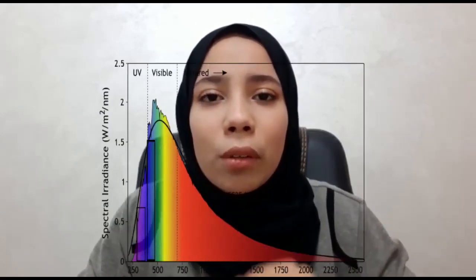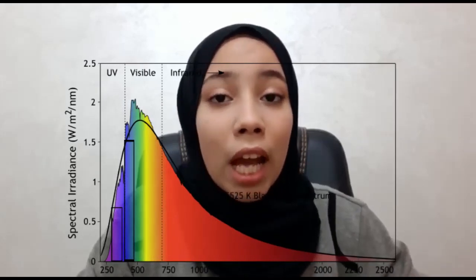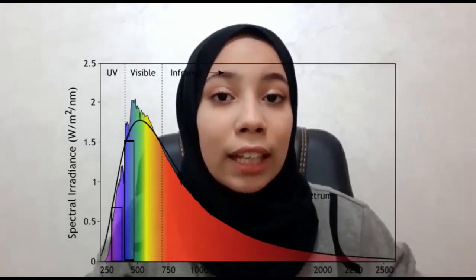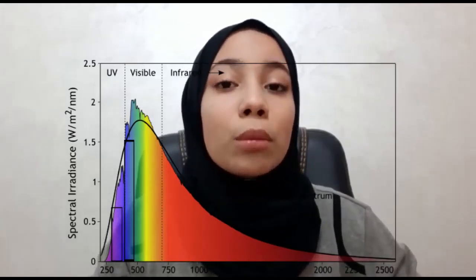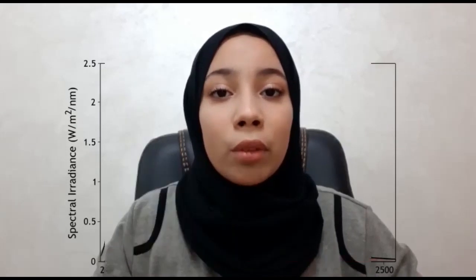Yes, you're right — it should be. But the following graph will explain to us why. As you can see, the Sun emits more blue light compared to the violet one, and as a consequence, the blue light will be scattered the most.